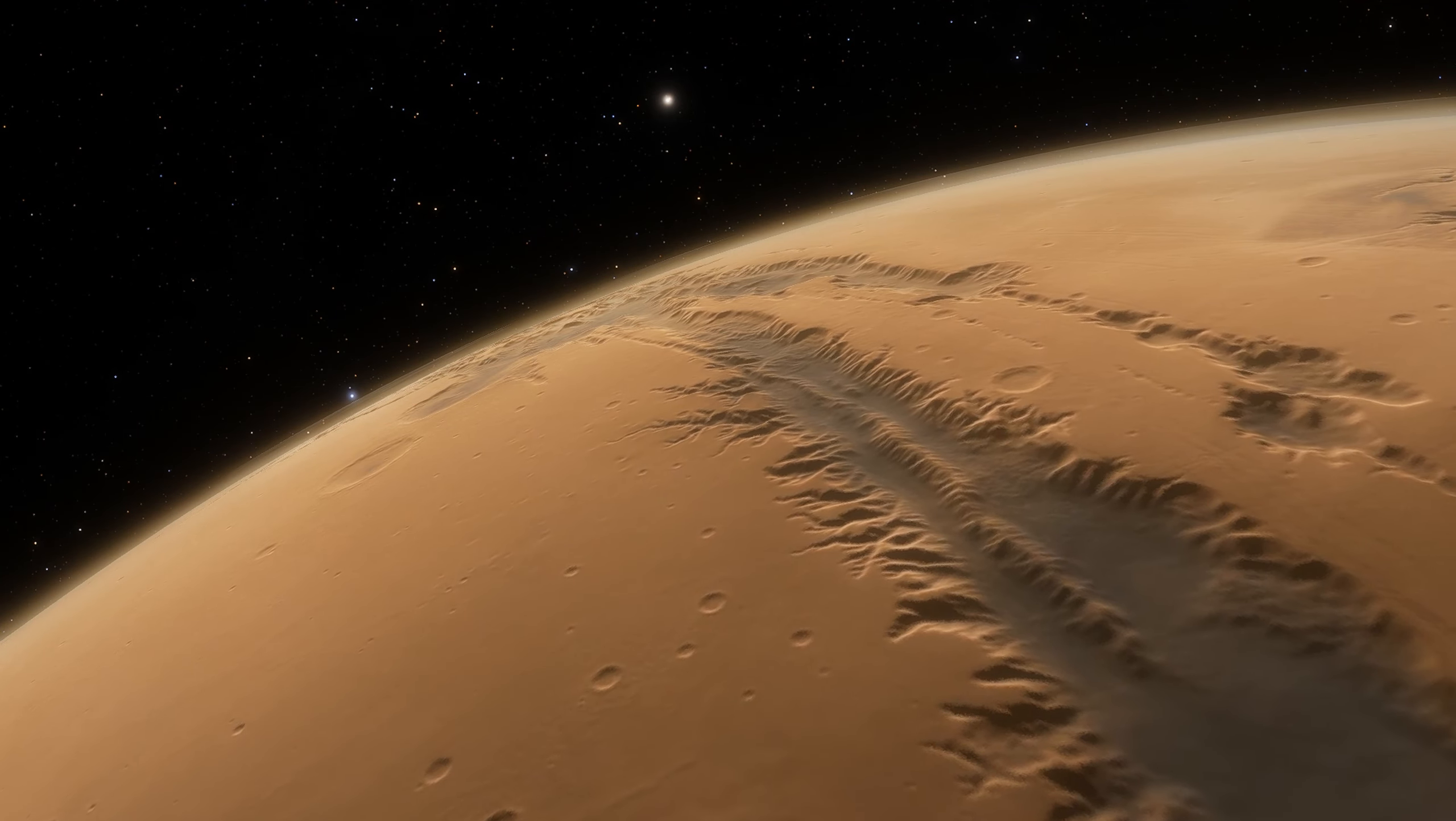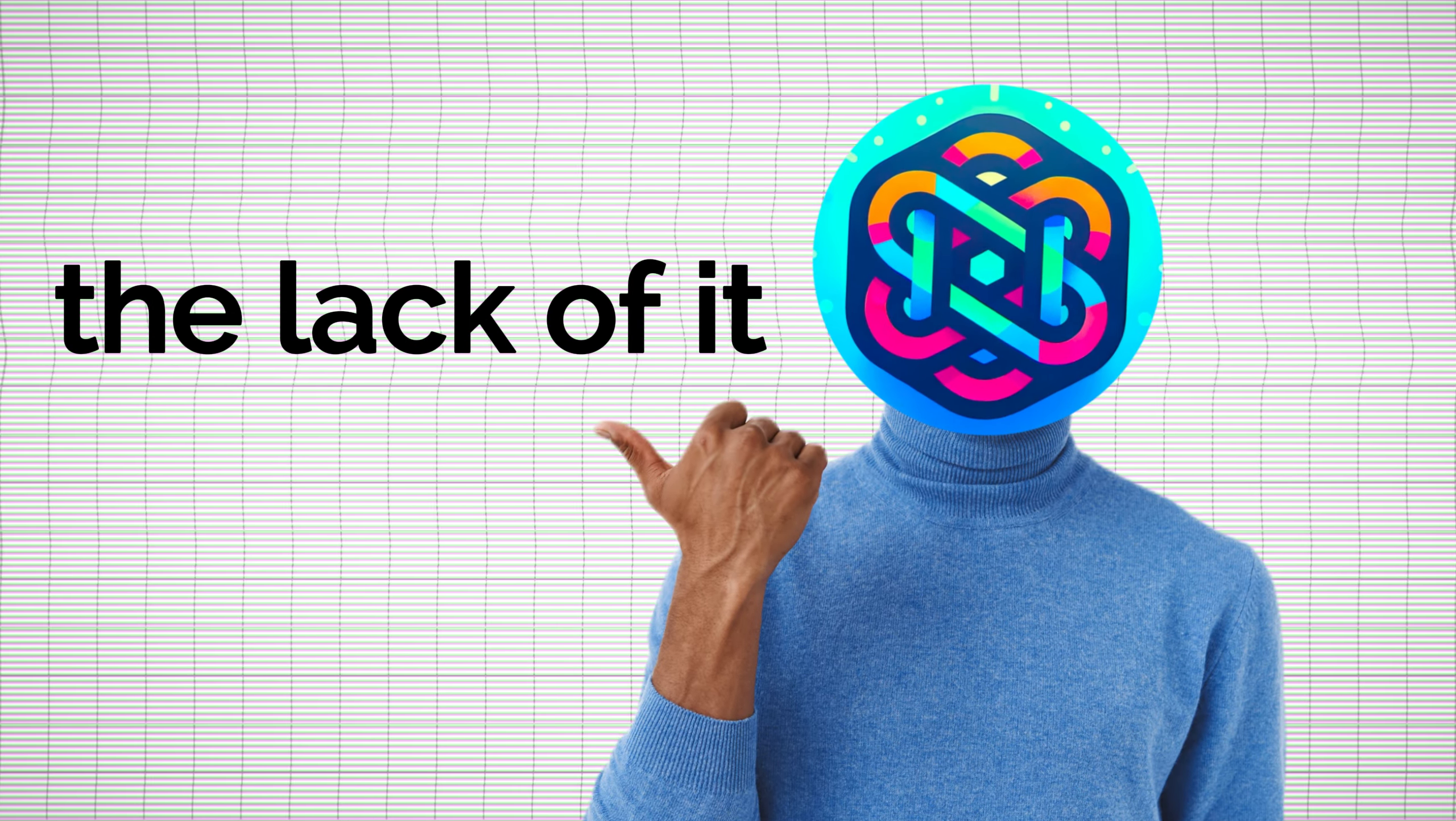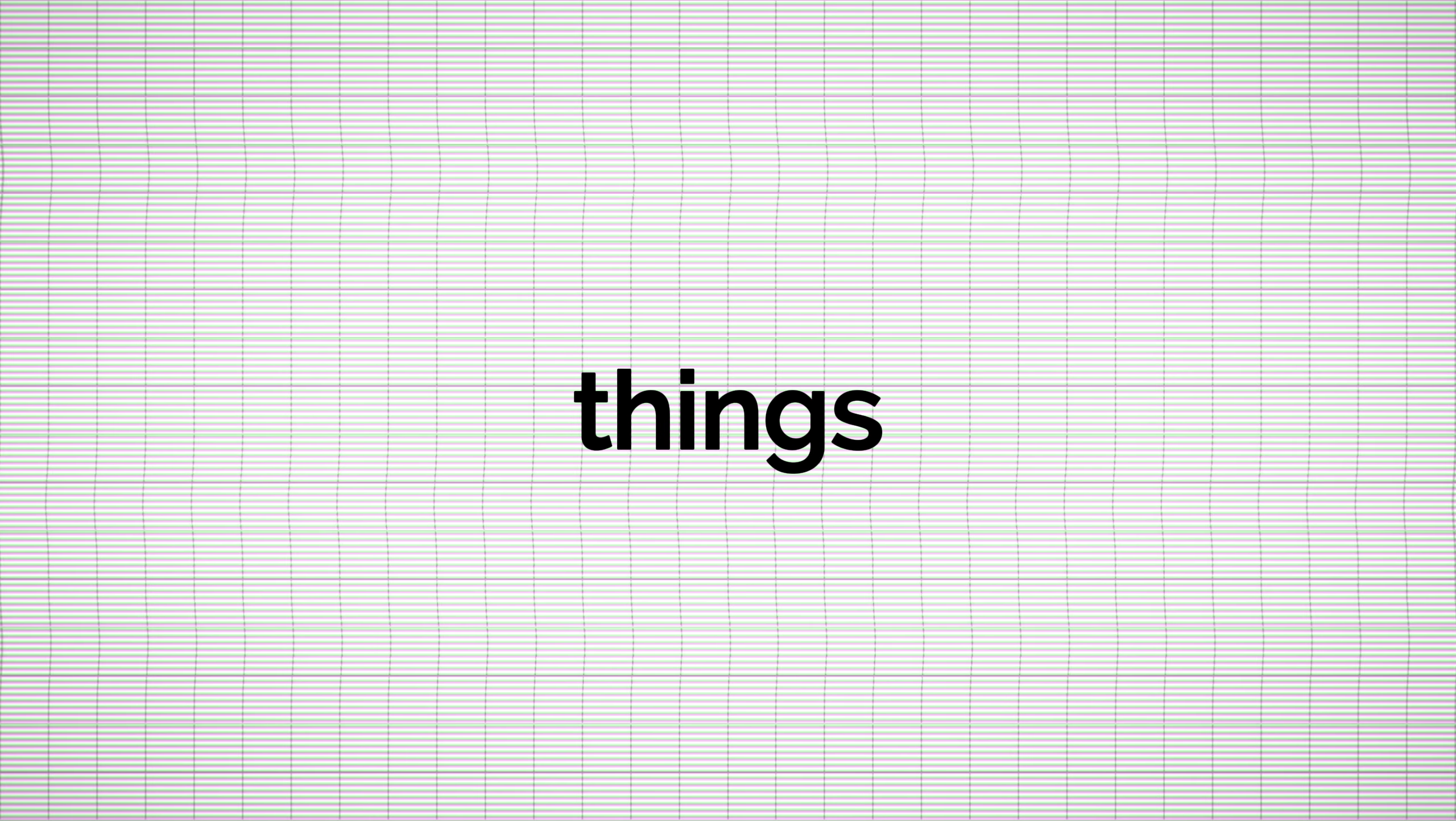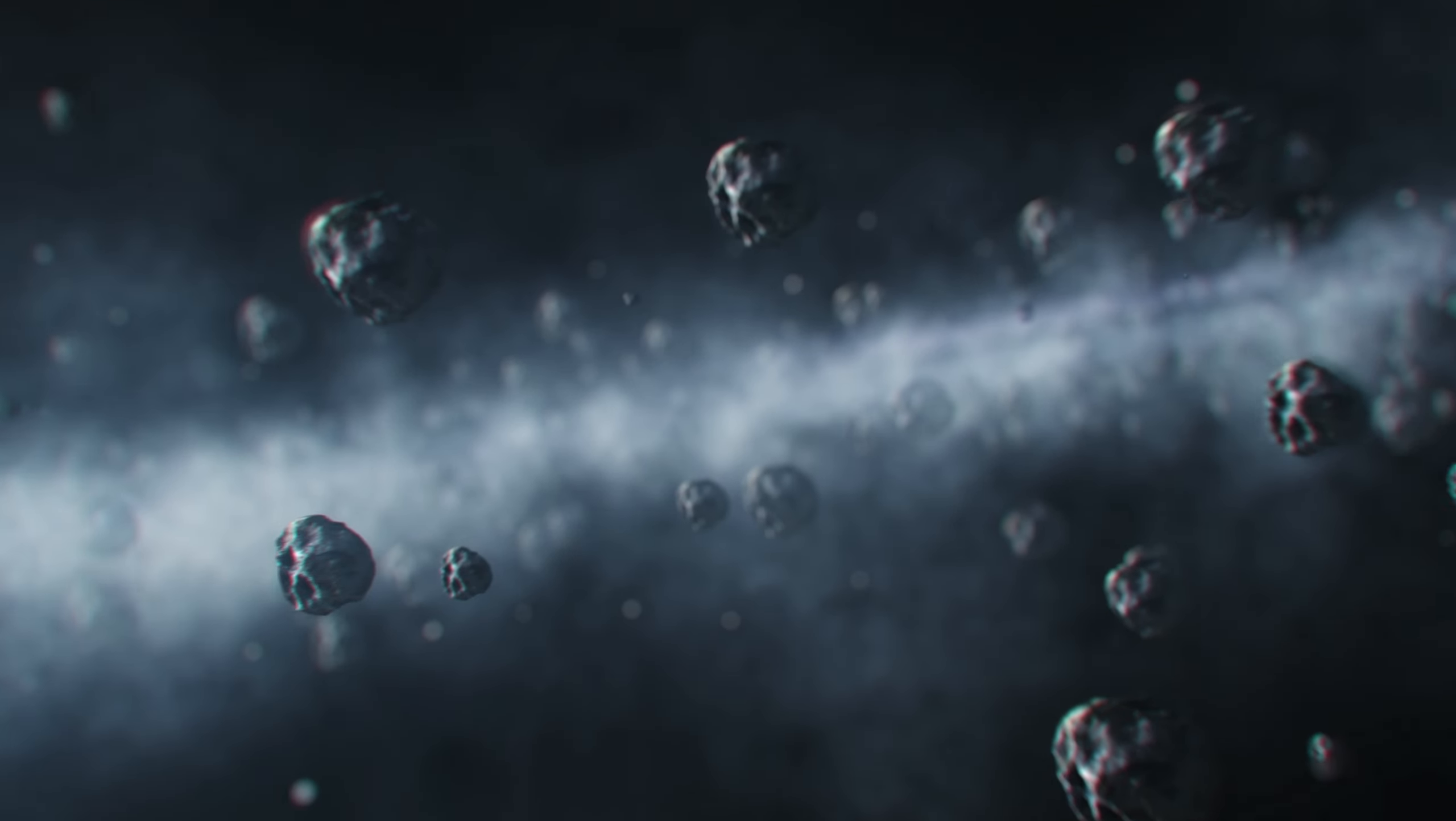Living on Mars might sound like an epic adventure, but the reality is a nightmare waiting to happen. Let's start with the atmosphere, or rather, the lack of it. Mars' atmospheric pressure is less than 1% that of Earth. This means two things: harmful solar radiation and micrometeorites constantly bombarding the surface.